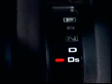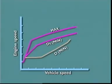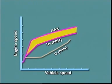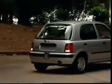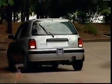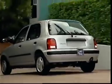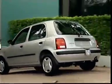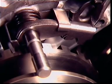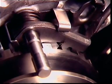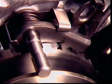In the DS position, ratio changes can occur only in the higher zone of the speed change region. In reverse, the pulleys are locked in a low ratio position. No speed ratio changes take place. In park, the secondary pulley is mechanically locked to the transmission case.